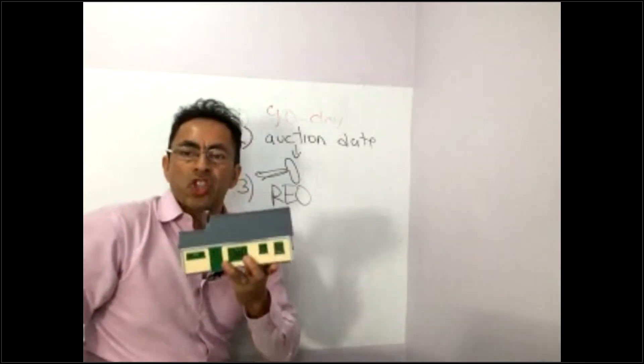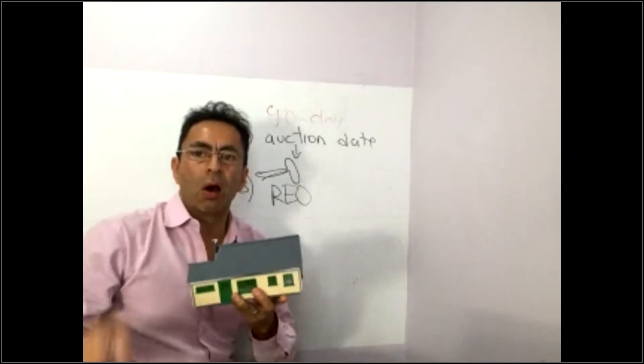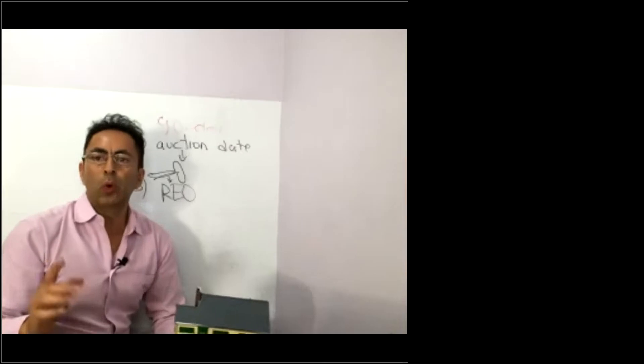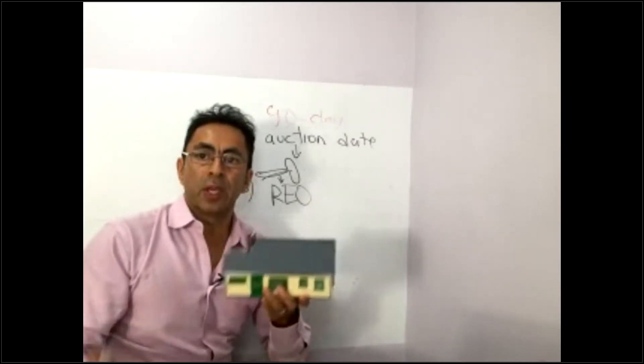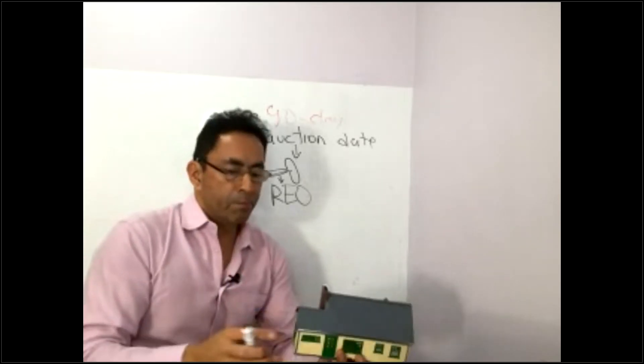We call this shadow inventory, also called bank-owned property. Why do we call it shadow inventory? Because when the property goes to the judicial auction and becomes REO, nobody knows about it — except through Chicago Deal Vault. I'm going to show you the minute properties become REO, you're going to know about that. Most importantly, you'll be able to buy these properties directly from large banks.